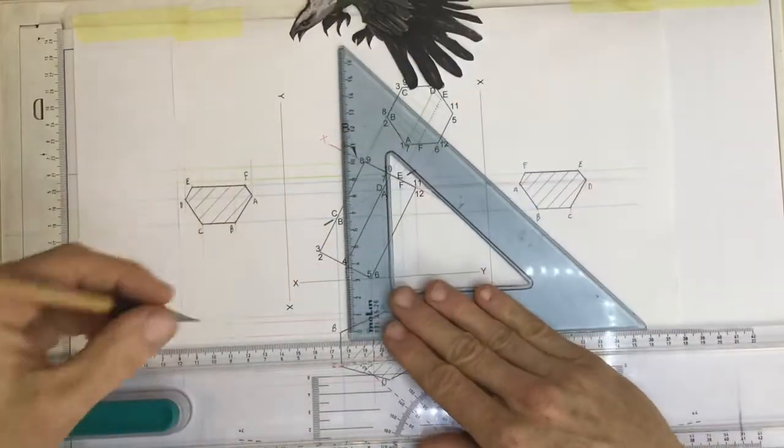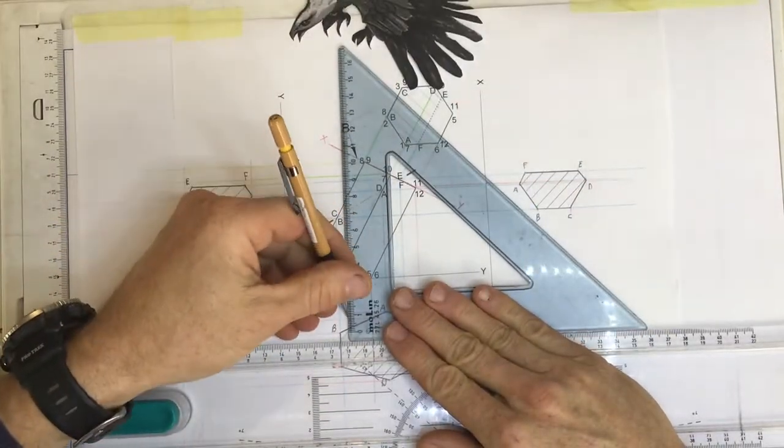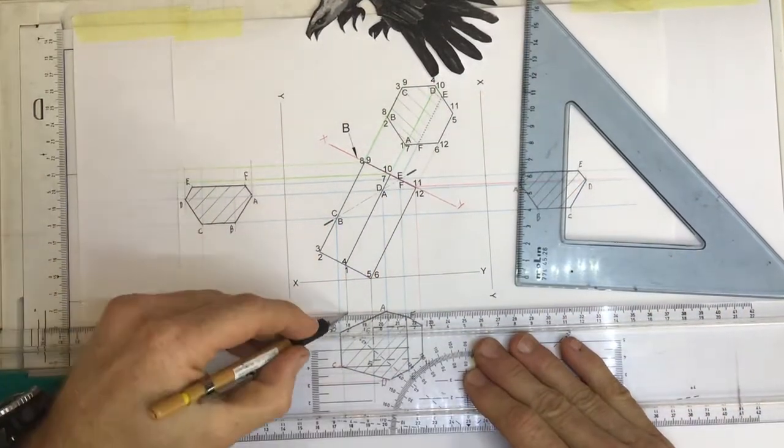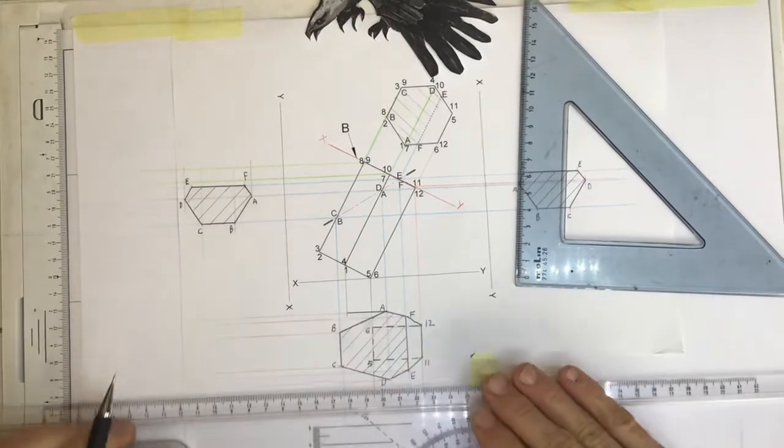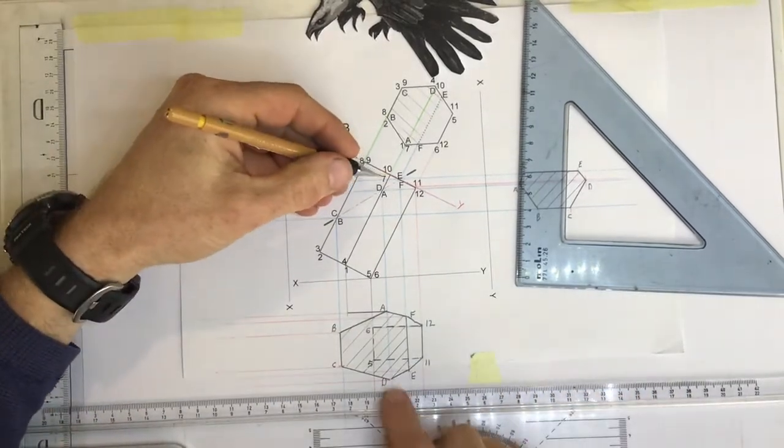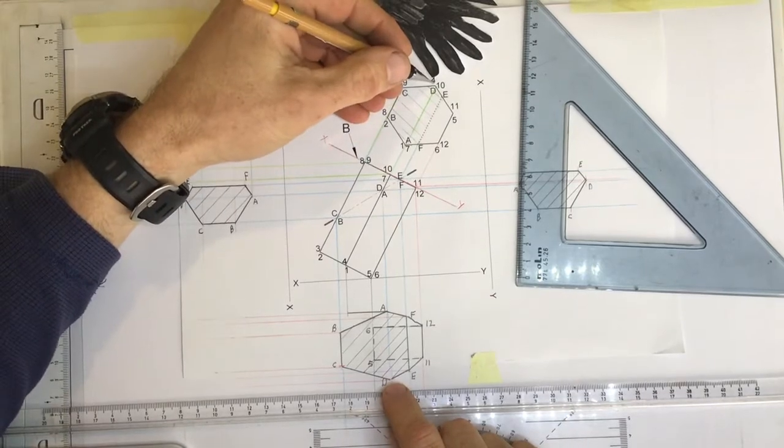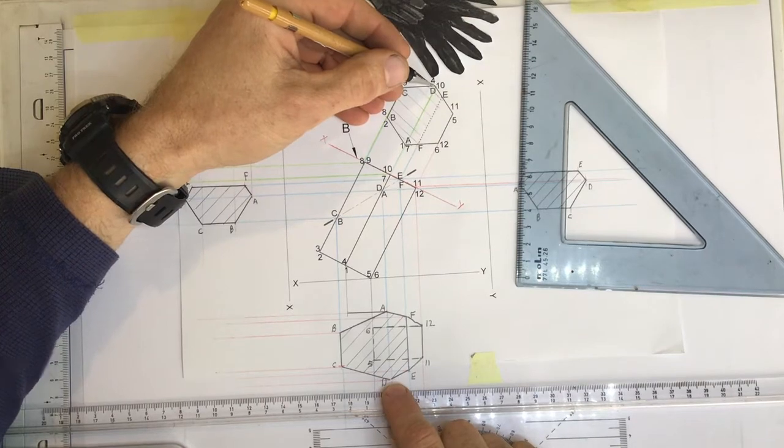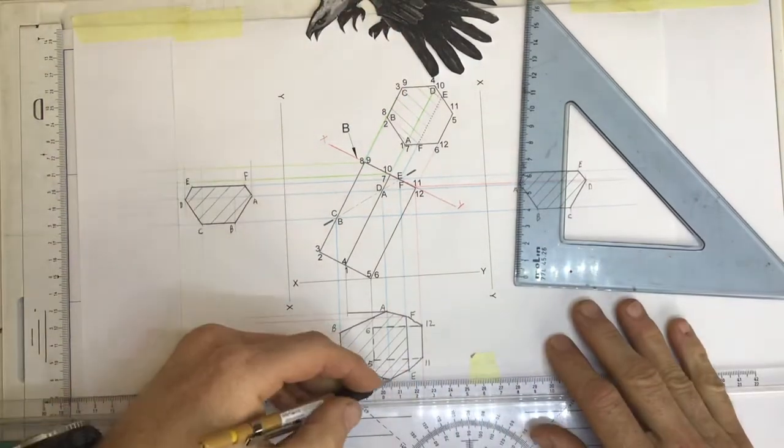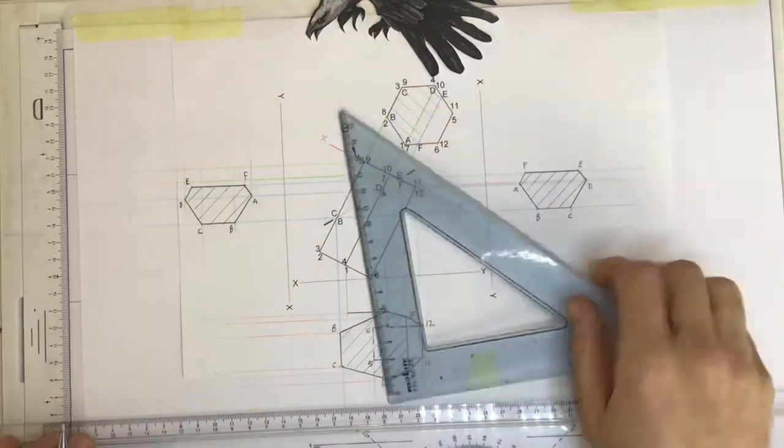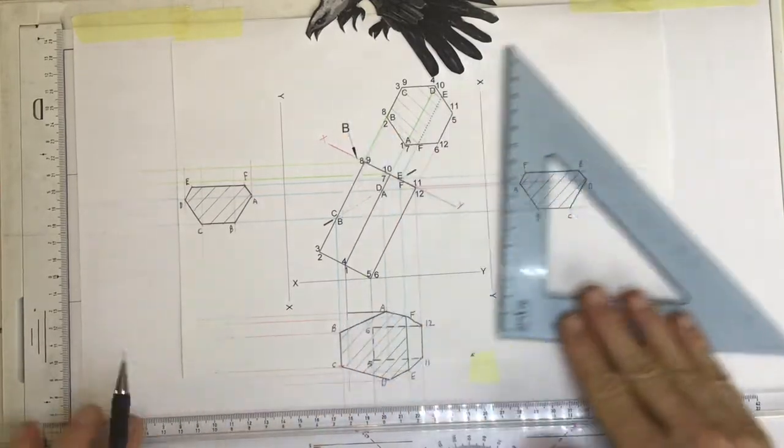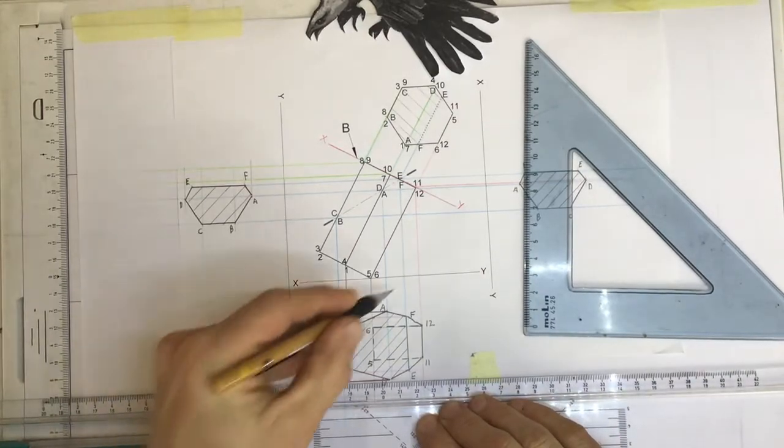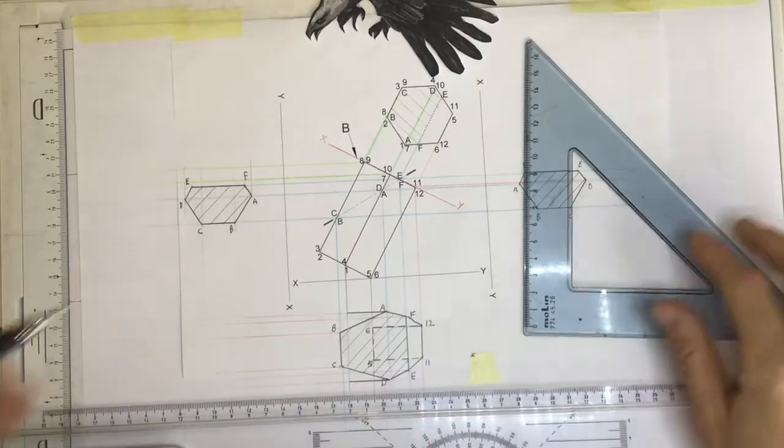I'm going to drop a line coming down from one and it links up with the line coming across from A. That is an edge. So it must be done as a dark line. Let's have a look at number four and D. Four and D is a point view over here. Take a line coming across from D. Take a line coming down from four. Four and D, point view, therefore, parallel to the X, Y axis in this view.